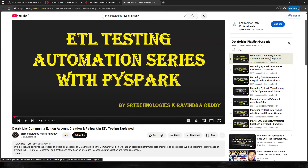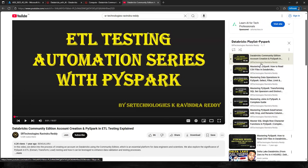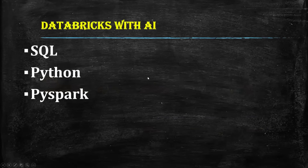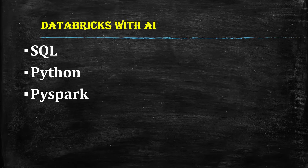I clearly mentioned how to create a community edition account, how to read CSV files, how to select, filter, transform, and perform DDL operations. Today what extra we are going to cover is how to utilize AI capability as part of Databricks — how we can use AI to work with SQL, Python, and PySpark.